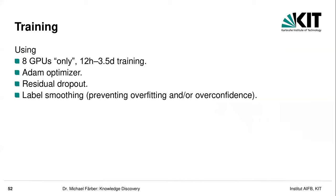Some words about the initial training and evaluation. The authors published this in 2017. They had one machine with eight GPUs, and training time was between 12 hours and three and a half days — quite reasonable. They used standard things like the Adam optimizer, residual dropout, and label smoothing, which helps prevent overfitting and overconfidence. Conclusion: nothing too special, but still quite effective. Nowadays, specific TPUs have been proposed — which you can also use at Google Colab — specifically designed for training transformer architectures and for these kinds of matrix multiplications.